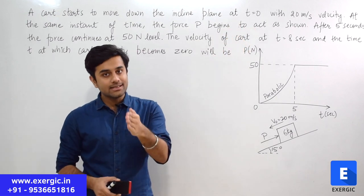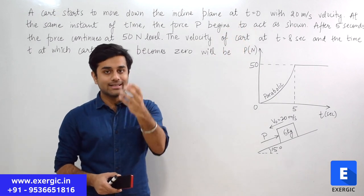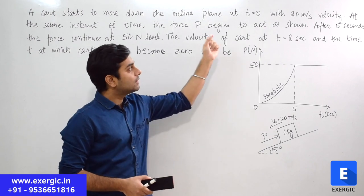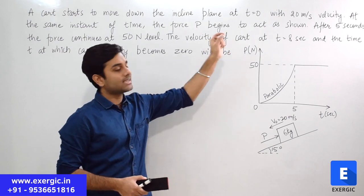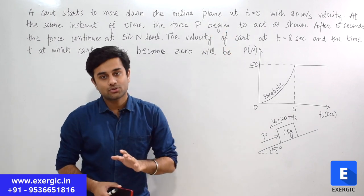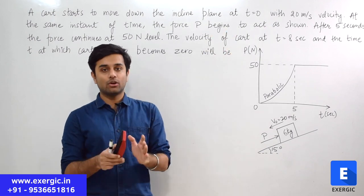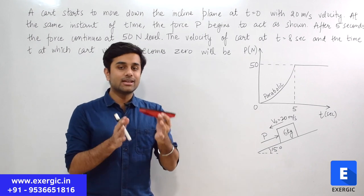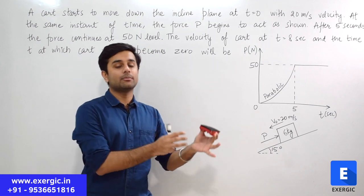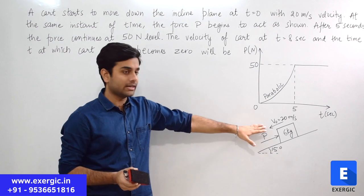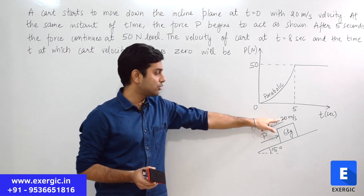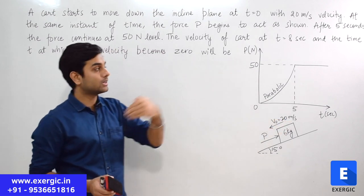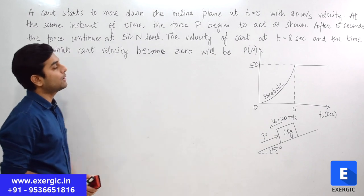It starts to move down the inclined plane at t is equal to 0. At time t equal to 0, it started the motion with 20 meter per second velocity. So the initial velocity, let us call it V₀, is equal to 20 meter per second. It is also mentioned here — V₀ is equal to 20 meter per second in the downward direction, down the inclined plane.